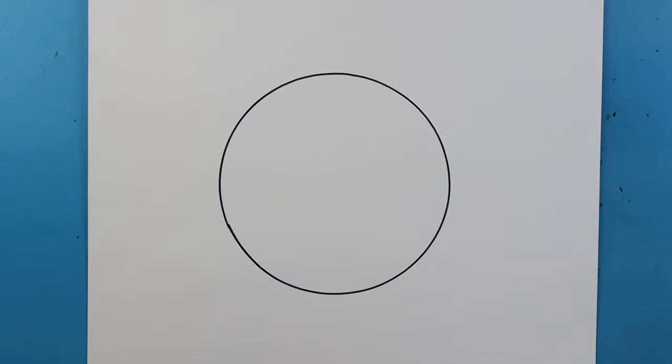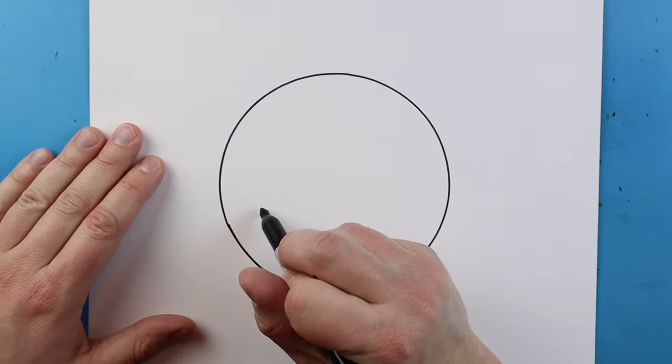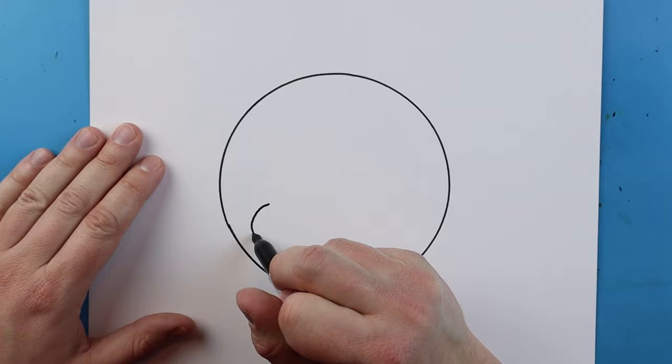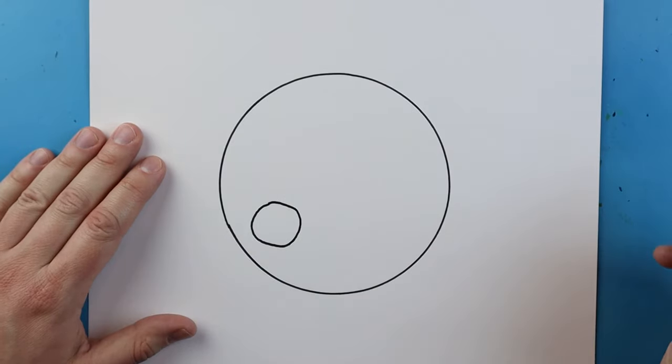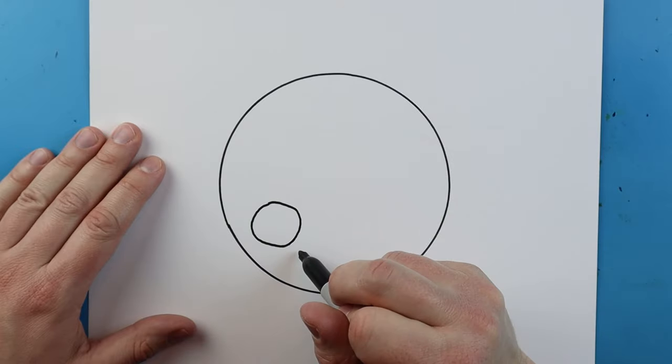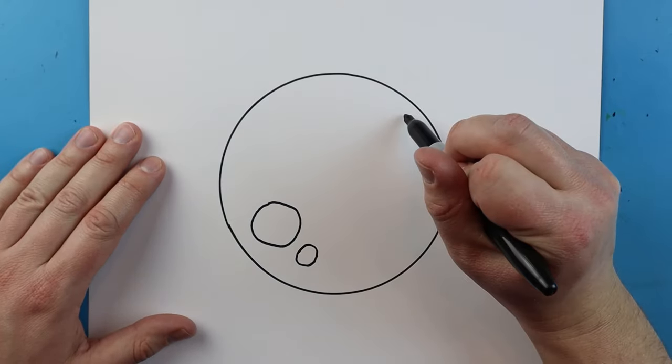Now we're going to make this kind of like a cartoony version of Mars, so I'm just going to add some little details on here. One of the things we want to add are some circles, and these circles do not have to be perfectly shaped. So I'm going to add a couple here, maybe a smaller one right there. I'm going to add another bigger one up here.